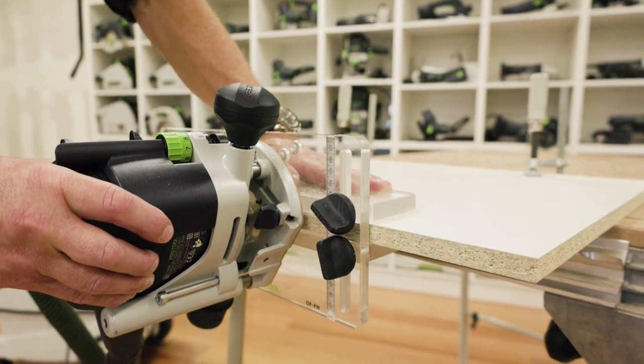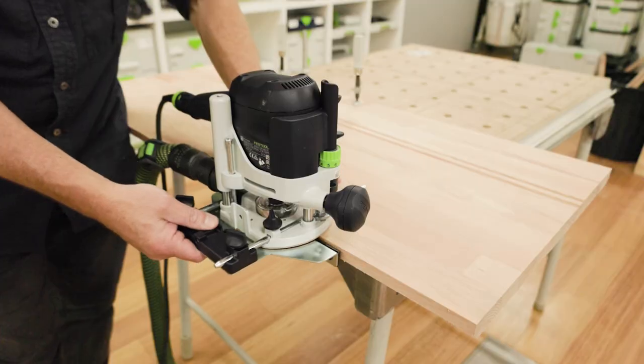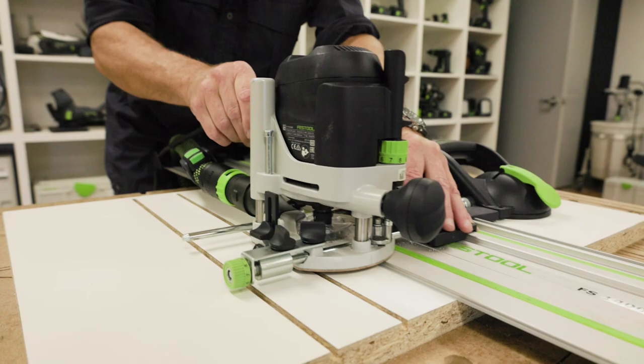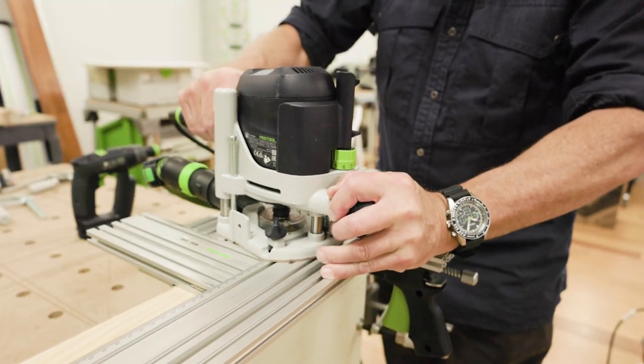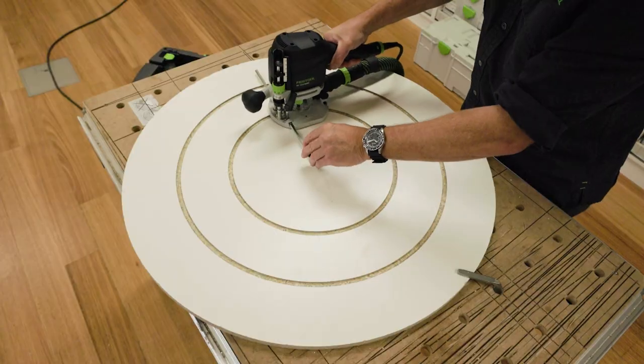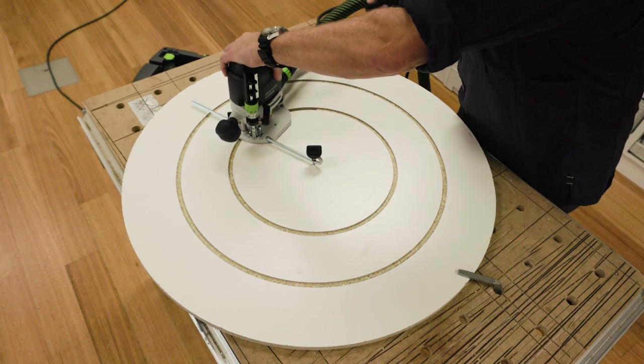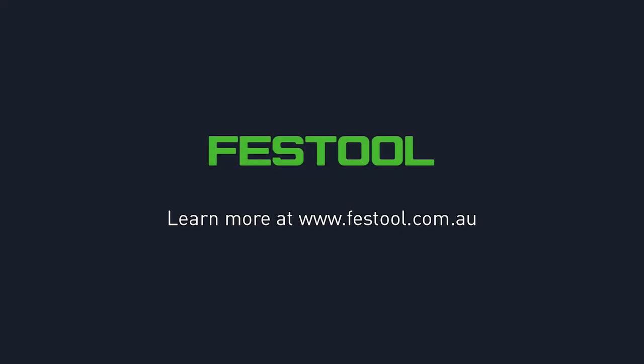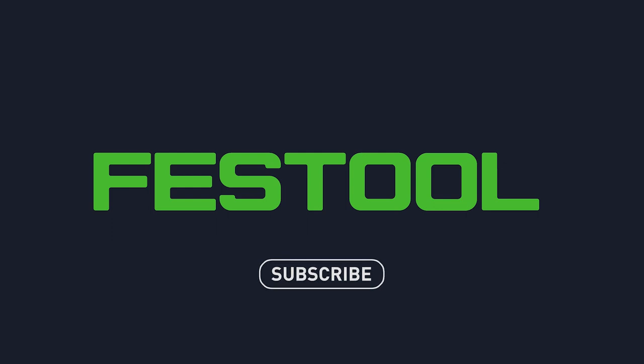The IF-1010R has a large range of accessories that increases versatility to cover many applications including guide rails, templates, and circle cutters. To keep yourself updated on Festool product information and applications, subscribe to our channel below.